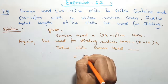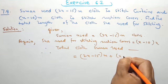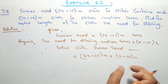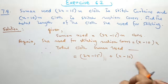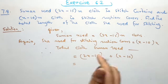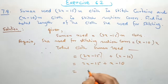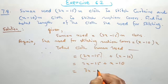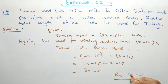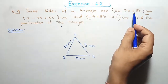Therefore, total cloth used equals 2 times (x minus 15) meters plus x minus 10 meters. We remove the meter unit and open the brackets: 2x minus 15 plus x minus 10. Here 2x plus x equals 3x, and minus 15 minus 10 equals minus 25. Therefore the answer is 3x minus 25 meters.